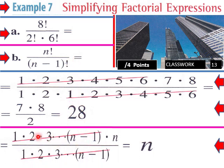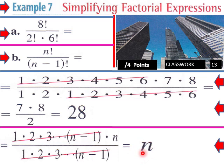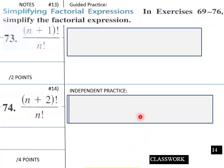For part b, simplify n! / (n−1)!. Expanding n! as 1 × 2 × 3 × ⋯ × (n−1) × n, and the denominator is 1 × 2 × 3 × ⋯ × (n−1). Everything cancels except n, so n! / (n−1)! = n.